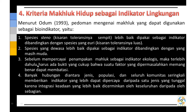Yang ketiga, sebelum mempercayai penampakan makhluk sebagai indikator ekologis, maka terlebih dahulu harus ada bukti yang cukup bahwa suatu faktor yang dipermasalahkan memang benar dapat membatasi. Jadi harus adanya uji pendahuluan untuk meyakinkan. Yang keempat, banyak hubungan di antara jenis, populasi, dan seluruh komunitas yang seringkali memberikan indikator yang lebih tepat dan lebih dapat dipercaya daripada satu jenis yang tunggal.